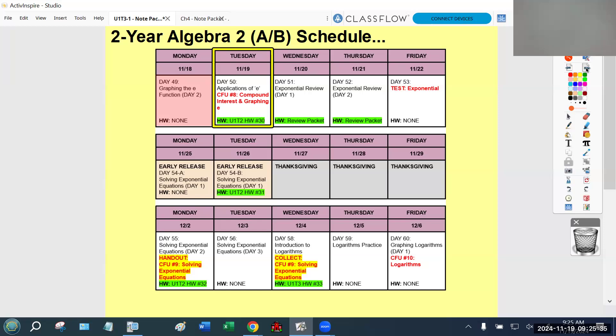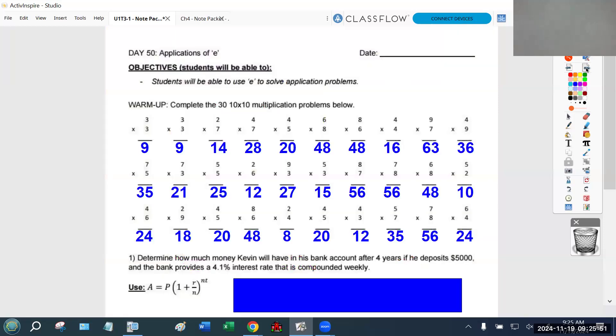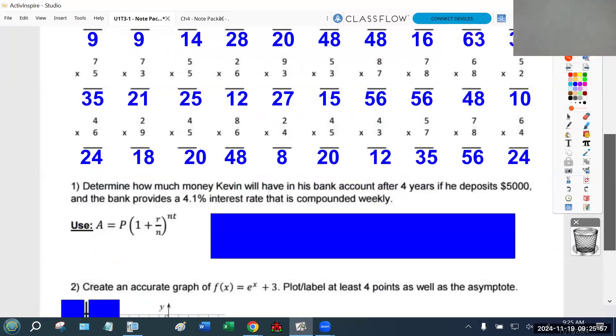One last thing - if you were absent yesterday, make sure you grab one of these yellow packets. This is a review packet due on Friday, the day of the test, and it counts as 10 free points on the test. Students were already given time to complete the multiplication at the top of page 37, so I'm going to get rolling with the bottom half.